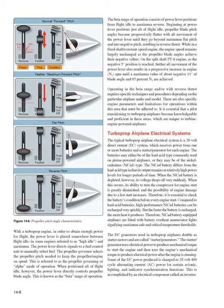Turboprop Airplane Electrical Systems. The typical turboprop airplane electrical system is a 28-volt DC system, which receives power from one or more batteries and a starter/generator for each engine. The batteries may be of the lead acid type or the nickel cadmium (NiCad) type. The NiCad battery differs from the lead acid type in that its output remains at relatively high power levels for longer periods of time. However, when the NiCad battery is depleted, its voltage drops off very suddenly, greatly diminishing its ability to turn the compressor for engine start and increasing the possibility of engine damage due to a hot start. Therefore, it is essential to check the battery's condition before every engine start. NiCad batteries can be recharged very quickly, but the faster the battery is recharged, the more heat it produces. Accordingly, NiCad battery-equipped airplanes are fitted with battery overheat enunciator lights signifying maximum safe and critical temperature thresholds.